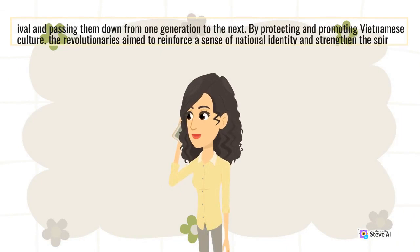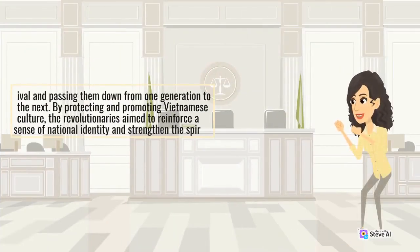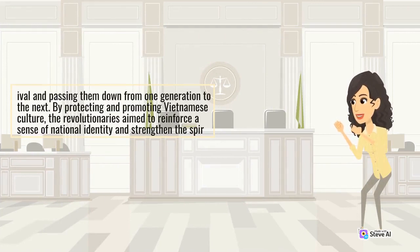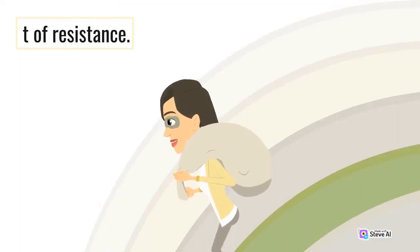Revolutionary Vietnam recognized the importance of preserving its cultural heritage amidst the fight for independence. Policies were implemented to safeguard traditional art forms, ensuring their survival and passing them down from one generation to the next. By protecting and promoting Vietnamese culture, the revolutionaries aimed to reinforce a sense of national identity and strengthen the spirit of resistance.